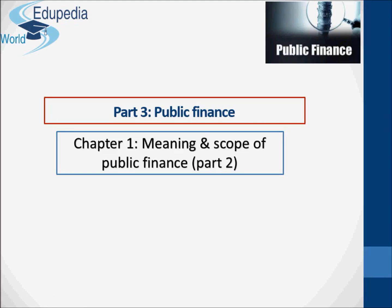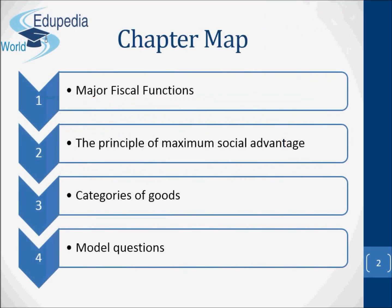Hello everyone and thanks for watching Edupedia World videos. In this video we are going to continue talking about the meaning and scope of public finance. We are going to talk about the major fiscal functions, then focus on the principle of maximum social advantage, the different categories of goods, and finally some model questions. So let's get started.